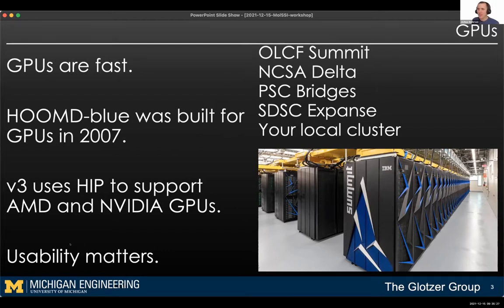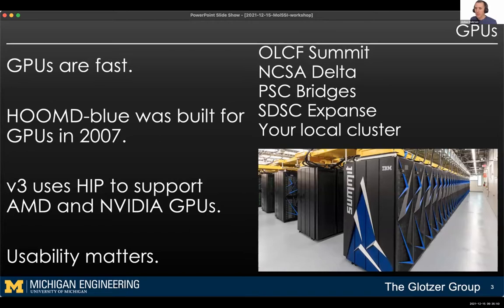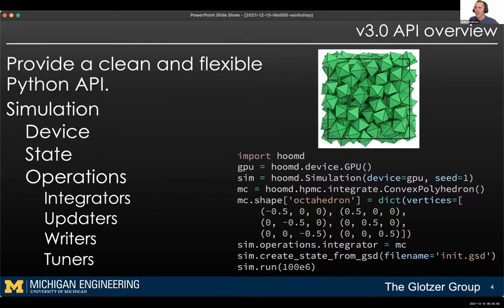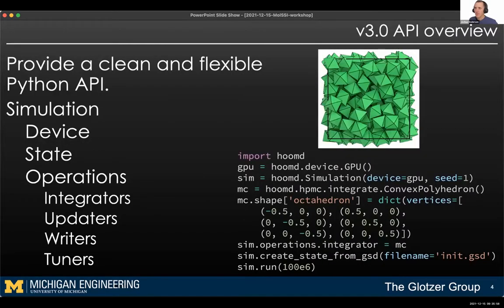The rest of this talk I'm going to focus more on usability of codes, because while GPUs are fast and you can spend years hand-tuning a kernel to get another 2% performance boost, at the end of the day, if your users can't use the code quickly and efficiently, they can't take advantage of that performance. Many users, both inside and outside our group, really like the Python interface for HOOMD, and so we've doubled down on that.